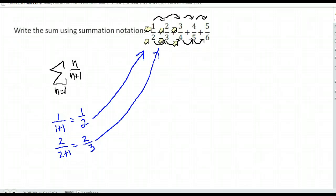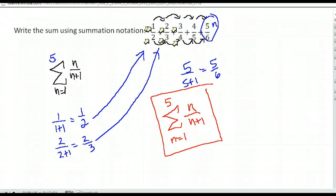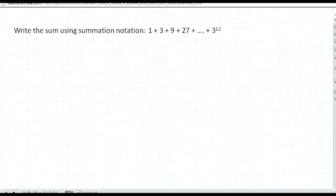I know I started at n equals 1. Now I just need to find out where should I stop. I look at that last term, it's 5/6. So our last n is going to be 5, because that would give me 5 over (5+1), or 5/6 as my last term. So my answer here is the summation from n equals 1 to n equals 5 of n over (n+1).